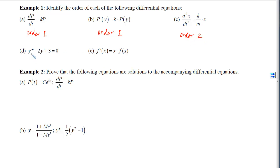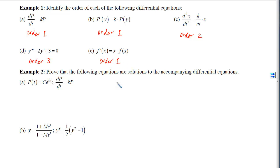If we look at the next one, we have two different derivatives — a third derivative and a first derivative. We take the highest one, so we'll have order three for this differential equation. Lastly, we have a derivative and the function itself, so the first derivative is all we've got and we have an order of one.